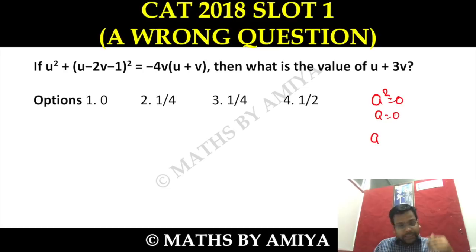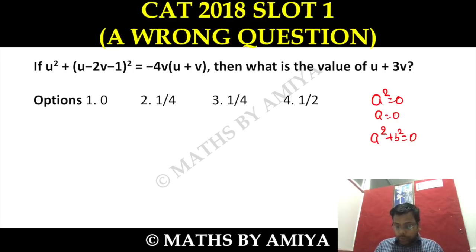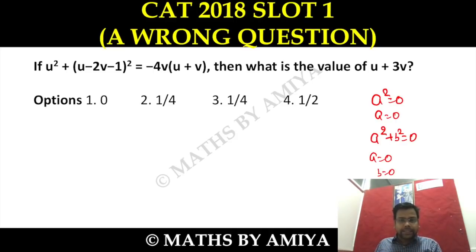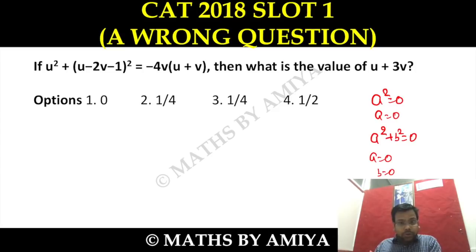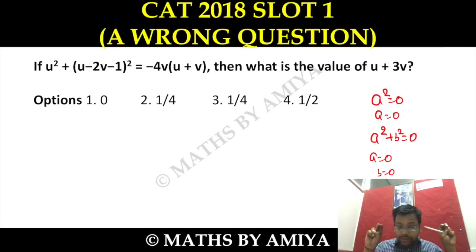My objection is to your assumption: if a² + b² = 0, then a = 0 and b = 0. A non-negative value plus a non-negative value equals zero — meaning both must be zero. This one is a wrong assumption. a² = 0 implying a = 0 is perfectly right. But a² + b² = 0 implying a = 0 and b = 0 simultaneously is a wrong assumption. You will say perfect squares cannot be less than zero, so their sum being zero means both are zero — but this is wrong.